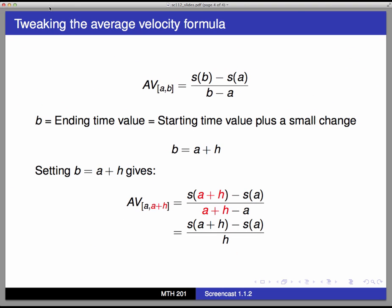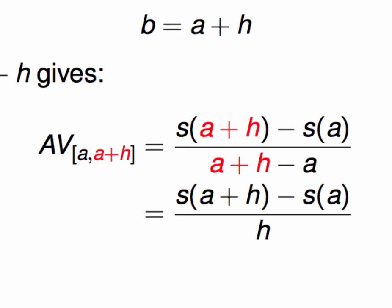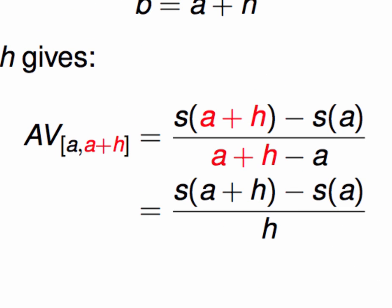If we look at it from this point of view, we can update the formula. Here, I've taken the average velocity formula that we already know, and just replaced b with a plus h in red. This happens in three places: in the subscript on the left hand side, in the numerator where there used to be an s of b, and in the denominator.